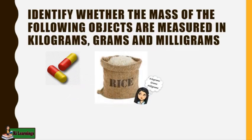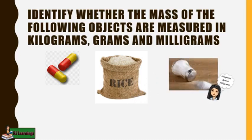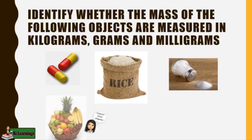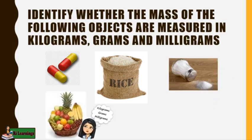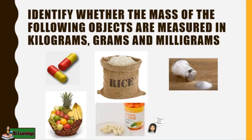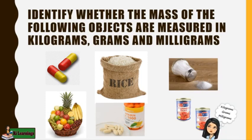Number two, a sack of rice. Number three, salt. Number four, a basket of fruits. Number five, vitamin. Number six, canned goods. Are you ready to check your answers?